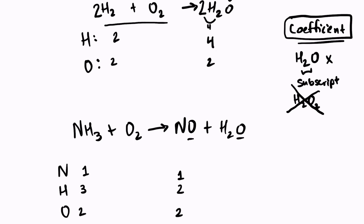The first thing I would fix is the hydrogen — that's the only thing that is imbalanced at the moment. We have 3 and 2, so we need to find the lowest common factor between 3 and 2, which is 6. I need to make 6 hydrogens on both sides. So I'm going to choose a coefficient of 2 on the left side because 2 times 3 equals 6, and a coefficient of 3 on the right-hand side because 3 times 2 is 6.